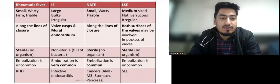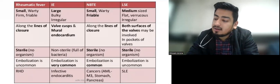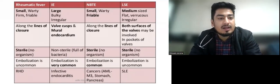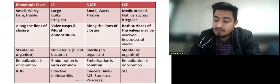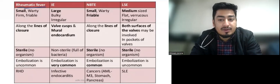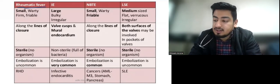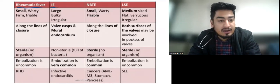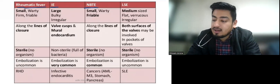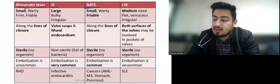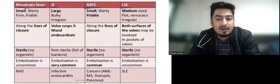There are four types of endocarditis that we commonly see. First is rheumatic fever major endocarditis, or the Aschoff vegetations. Then infective endocarditis, which is very important. Then we have NBTE — non-bacterial thrombotic endocarditis — and then we have Libman-Sacks endocarditis.